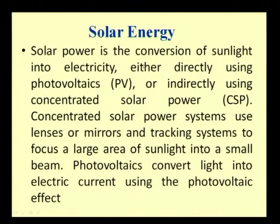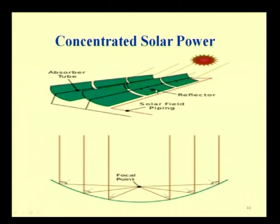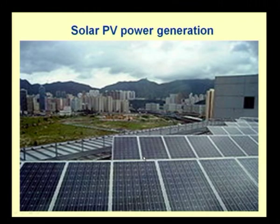Now the last topic: solar energy. Solar energy is the conversion of sunlight into electricity by photovoltaics or indirectly using concentrated solar power (CSP). Concentrated solar power systems use lenses or mirrors and tracking systems to focus a large area of sunlight into a small beam. Photovoltaics convert light into electric current using the photovoltaic effect. A large amount of energy can be created by stacking many solar cells side by side.